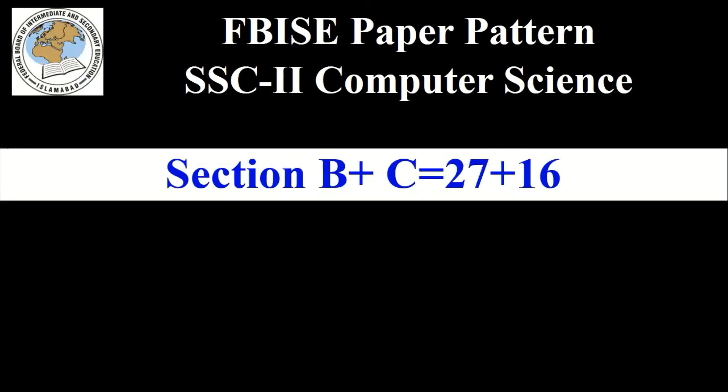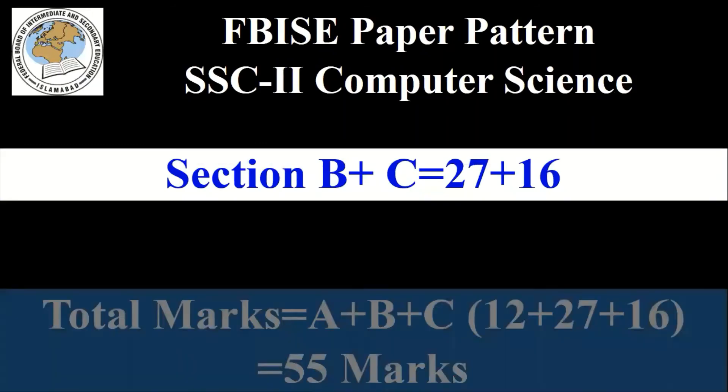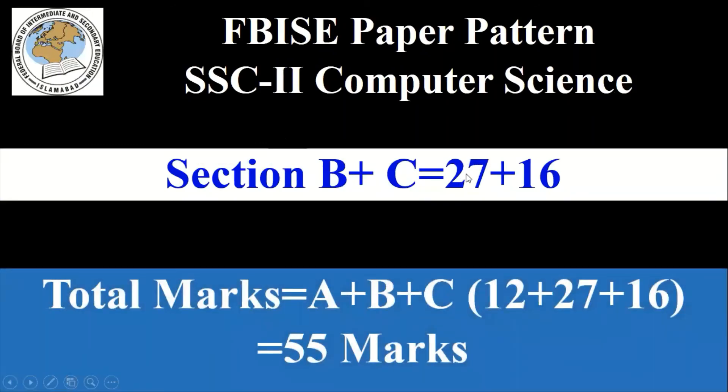So let's get the total marks from different sections. Section B plus C has 27 plus 16. So total marks will be A plus B plus C: 12 marks of Section A, 27 marks of Section B, and 16 marks of Section C, which becomes 55 marks. So we have a 55 marks paper of computer science.